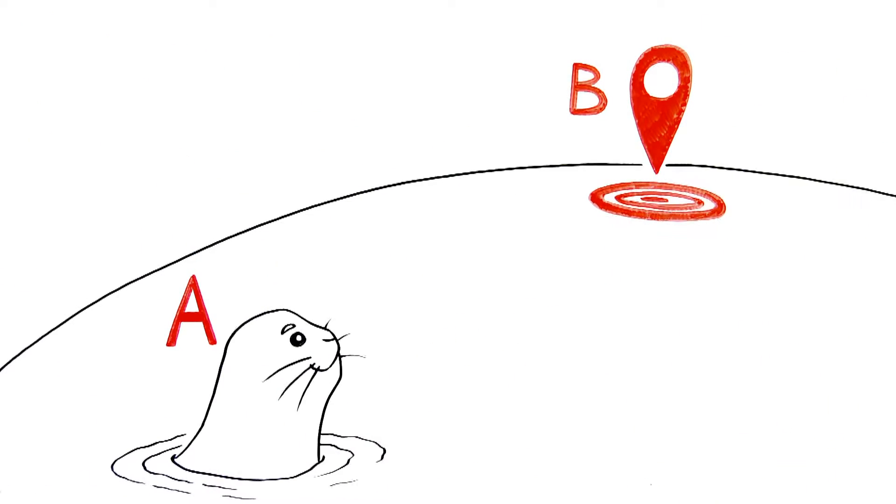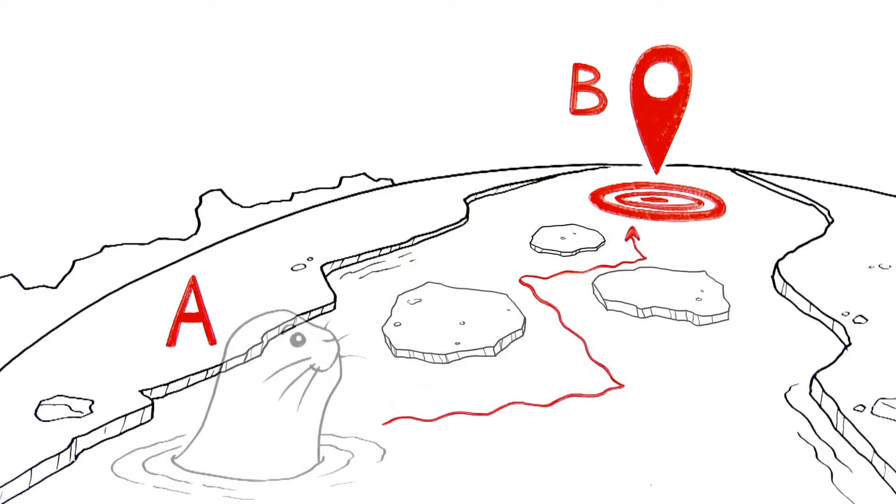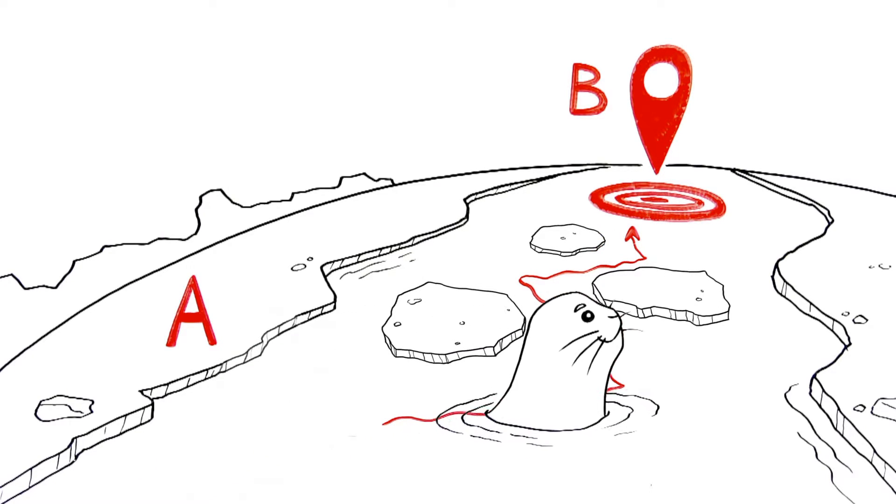Just think of our seal swimming from point A to point B. A straight line is the quickest route. That's regular insulation. But if he zigzags, it'll take much longer to reach the destination. That's Neopor.